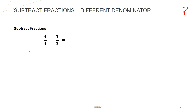Let us see how to subtract two fractions when we have different denominators. In our first fraction 3 upon 4, we have denominator 4, and in the second fraction we have denominator 3. So the first step will be to have a common denominator.